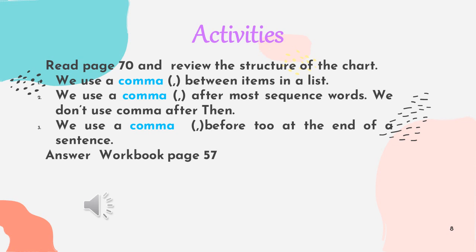Now, guys, we are going to see the use of commas. On page 17 of your student's book, you have the rules for the use of commas. For example: we use a comma between items in a list, or we use a comma after most sequence words. We don't use a comma after the word 'then,' and we use a comma before 'too' at the end of a sentence.